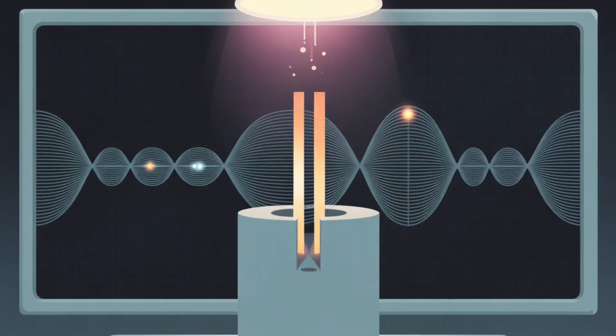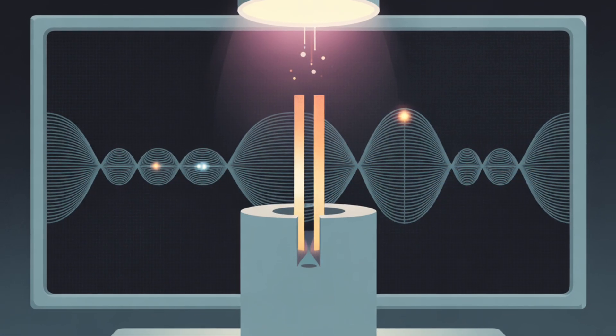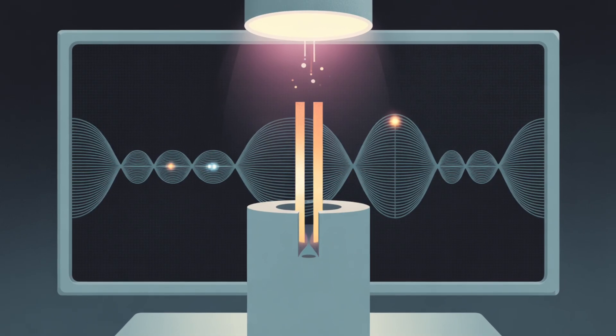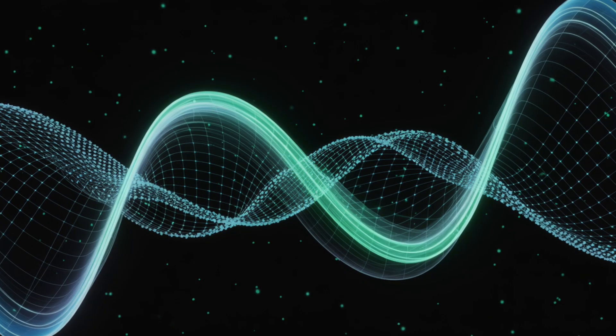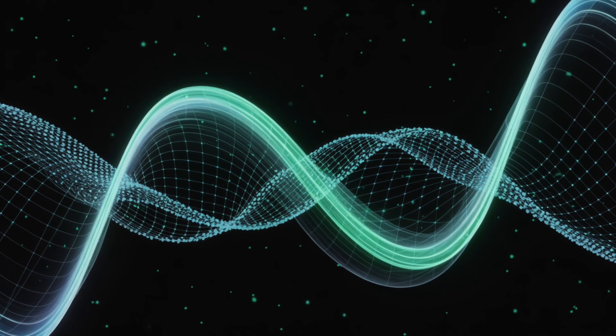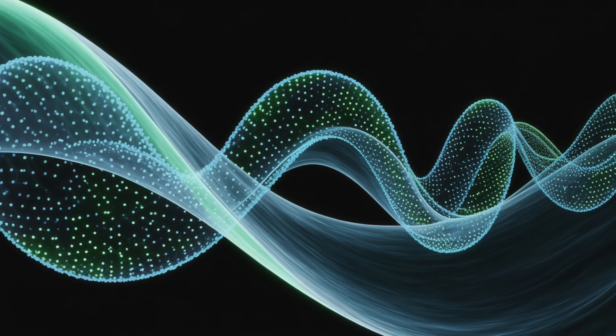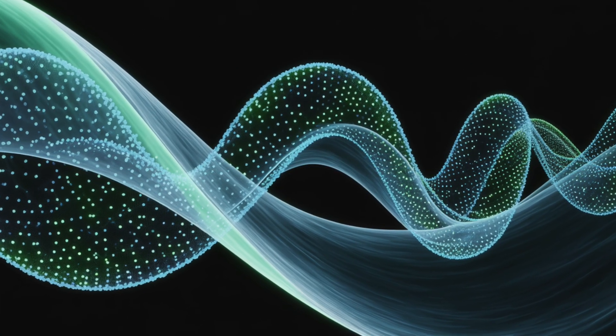This duality would later define quantum mechanics, influencing everything from the double-slit experiment to the quantum field theory that underpins modern physics. Light was no longer a simple phenomenon. It was a messenger from the quantum realm, whispering secrets about probability, uncertainty, and the nature of existence.